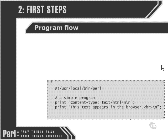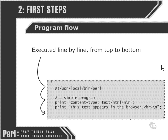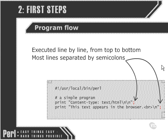Let's look at the program flow of a Perl script and the way in which a Perl script can be anatomized into different parts. The first thing to note is that the Perl executable will read the script from top to bottom. Unless we tell it otherwise, it's going to start at the top and execute every line of code until it gets to the end. The lines of code are delimited by semicolons, so it's very important not to forget the semicolon at the end of each line.